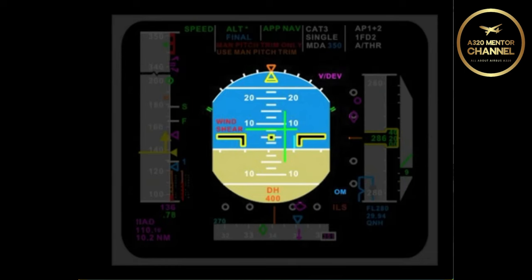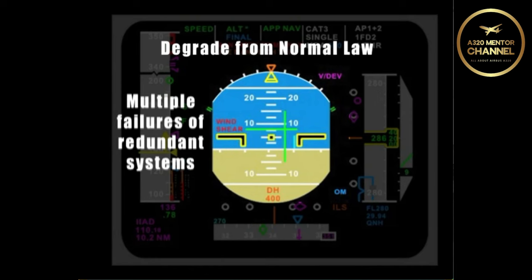How would you degrade from normal law? Well, there are two different ways you can degrade. One is the catch phrase, multiple failures of redundant systems. The other way is getting into an abnormal attitude.